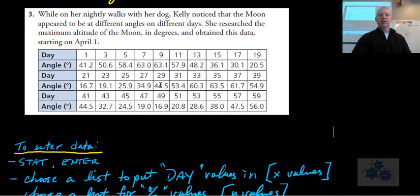So the question is, number three, while on her nightly walks with her dog, Kelly noticed that the moon appeared to be at different angles on different days. She researched the maximum altitude of the moon in degrees and obtained this data starting on April 1st. So on day one, the angle of the moon, I'm assuming above the horizon here, would be 41.2 degrees. Day three, this one, and so on.